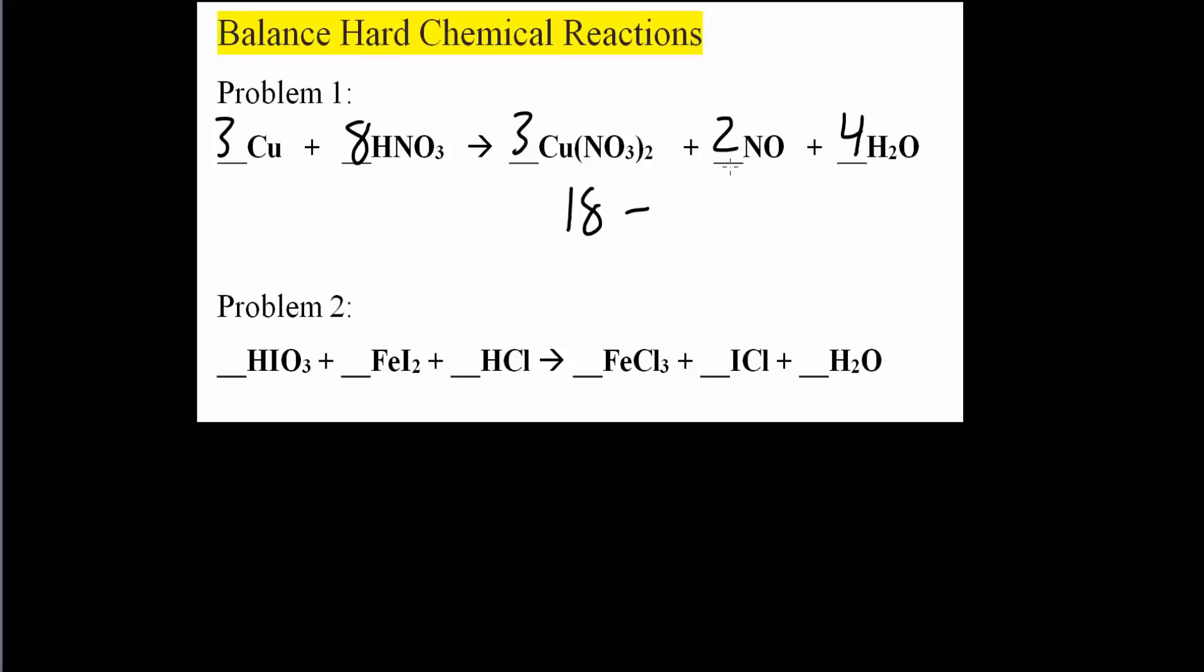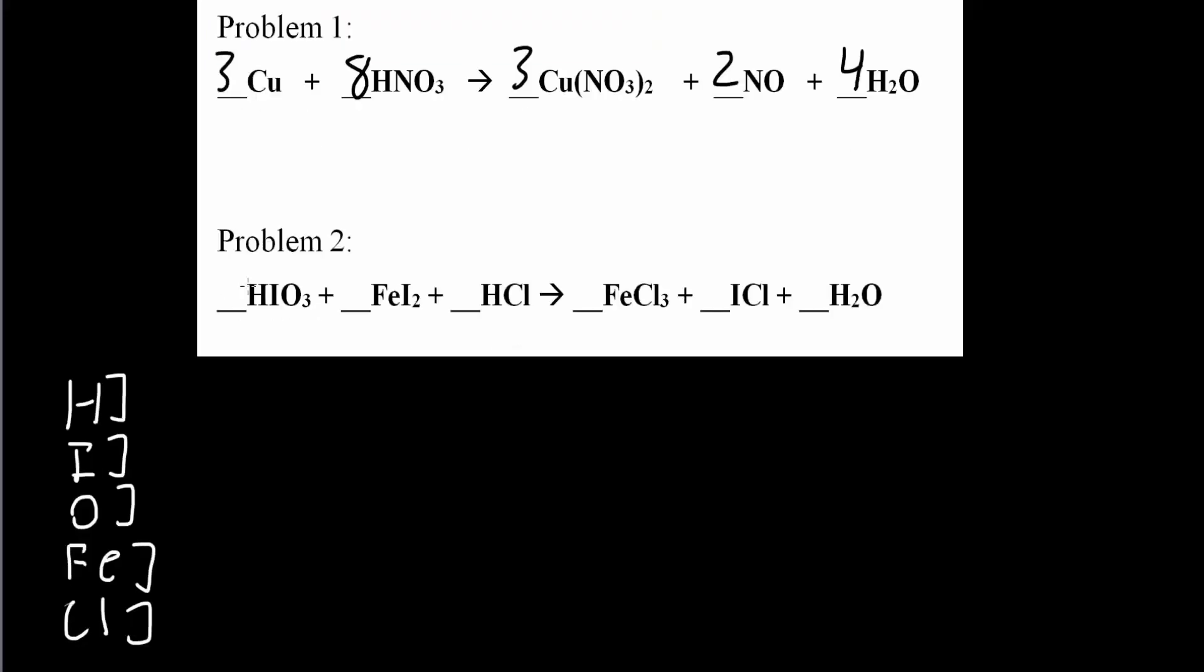And just to prove that the TI Inspire CX CAS can do what we're doing, and it's not just a coincidence, we'll do this problem also. So same exact procedure. So we have H, I, we have an O and we have Fe and we also have Cl. And now we will write the unknown, which is A, B, C, D, and so on.